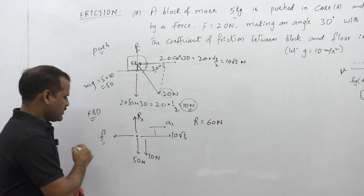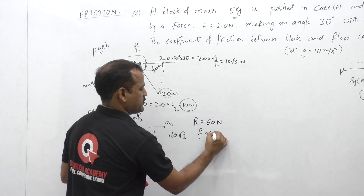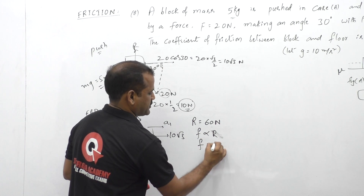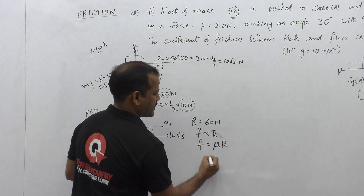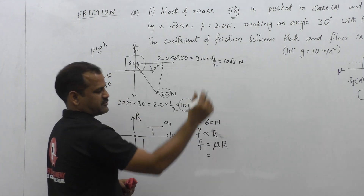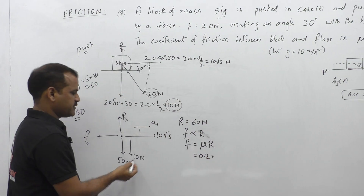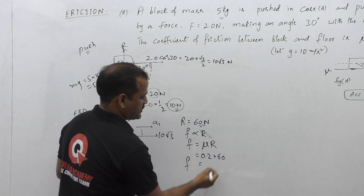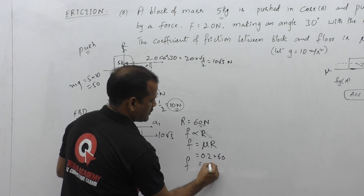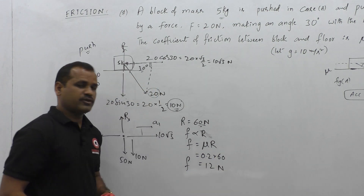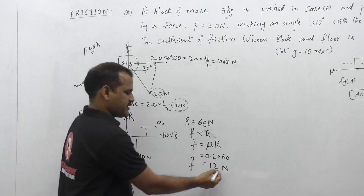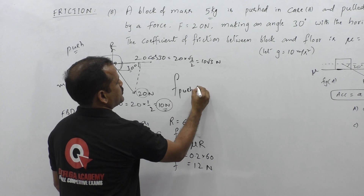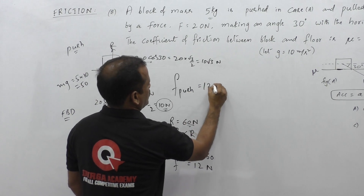The frictional force formula is: friction = coefficient of friction × normal reaction = 0.2 × 60 = 12N. So in the pushing case, the frictional force is 12N opposing the motion.